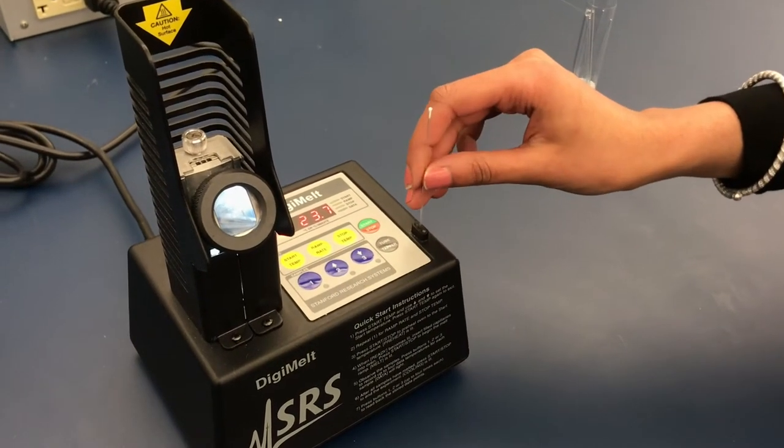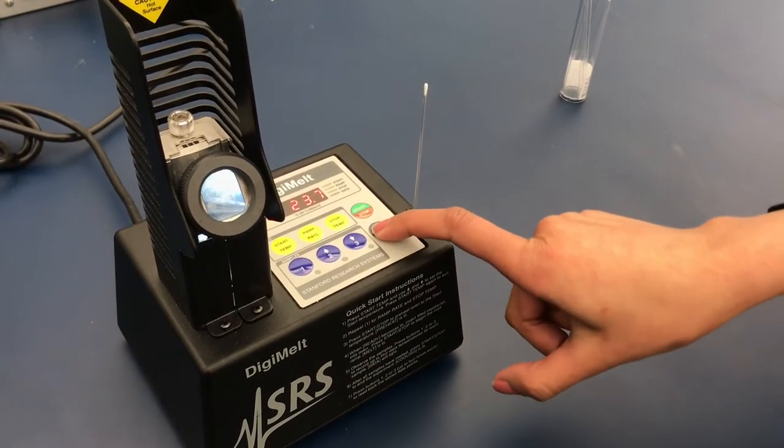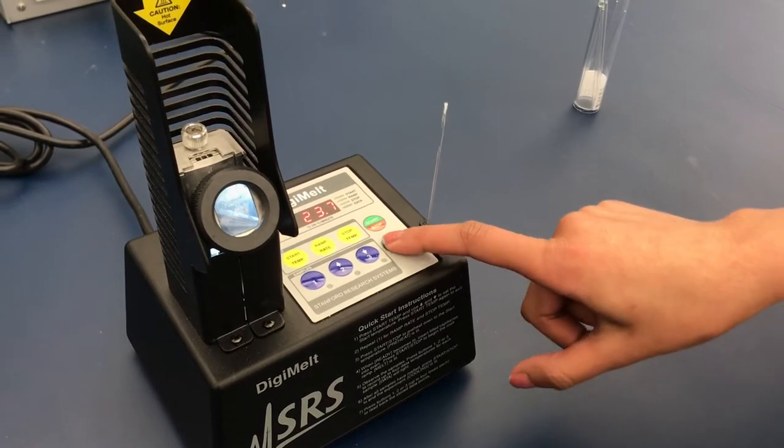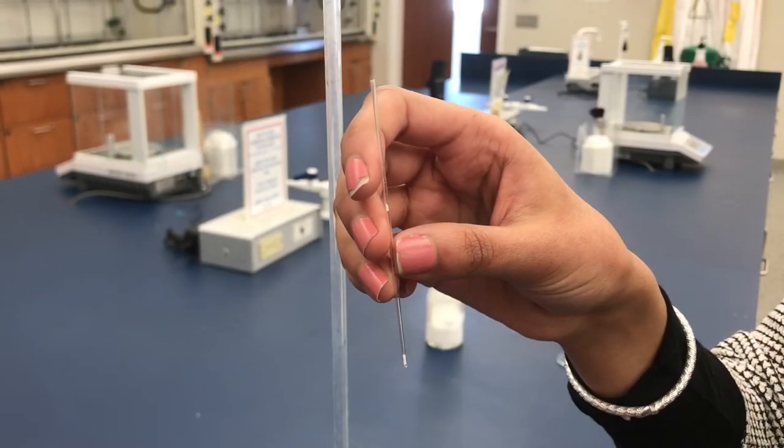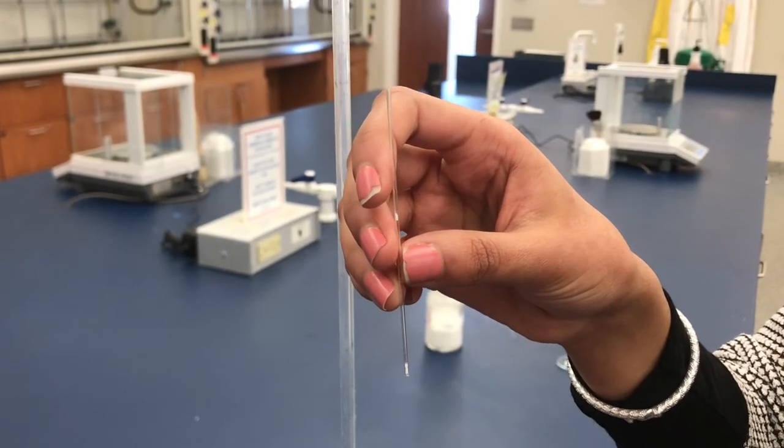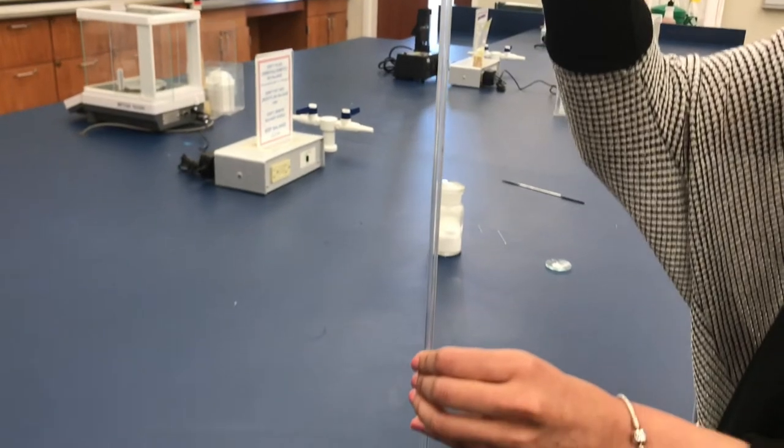Now place the capillary tube in one of the three tube tapper holes and press the button labeled tube tapper. This will bring down the solid to the bottom of the tube. You may have to press it a couple times before this happens. If this does not work, then you may use a glass rod to drop the melting tube through.